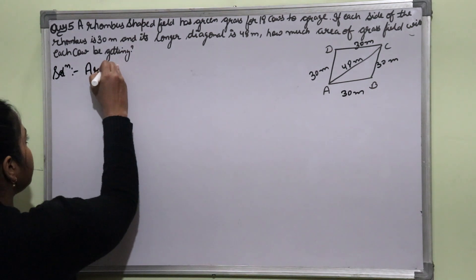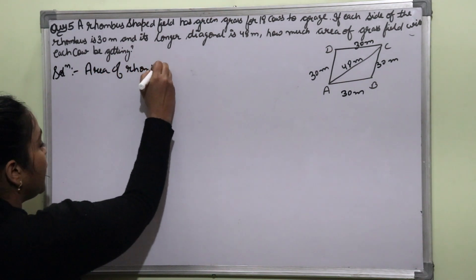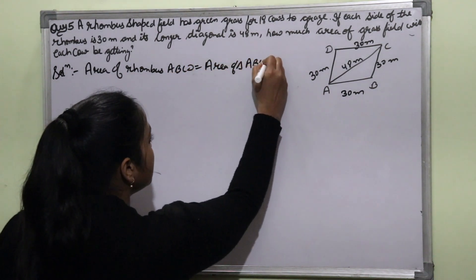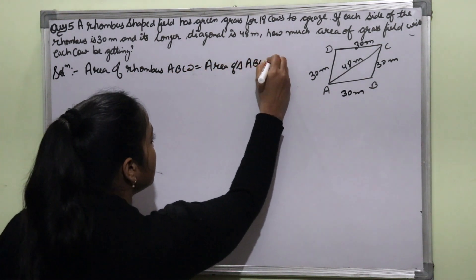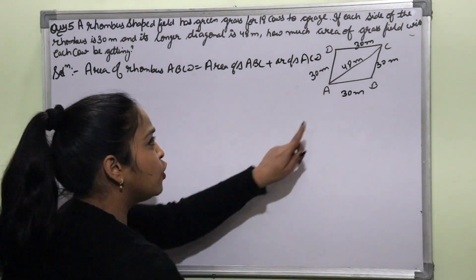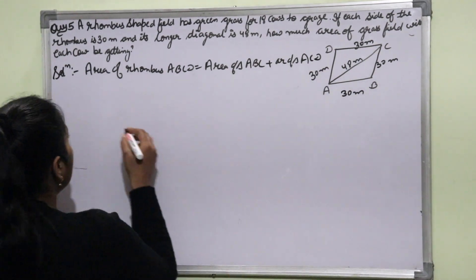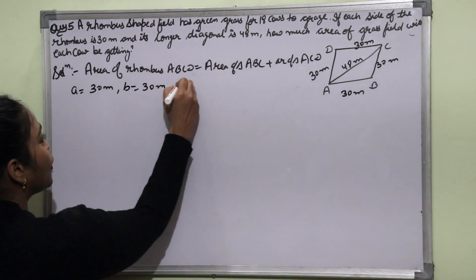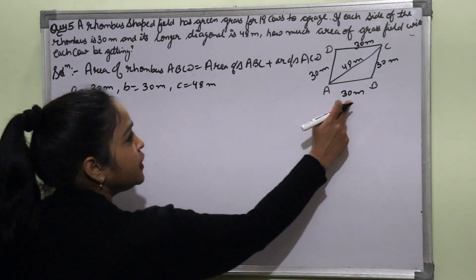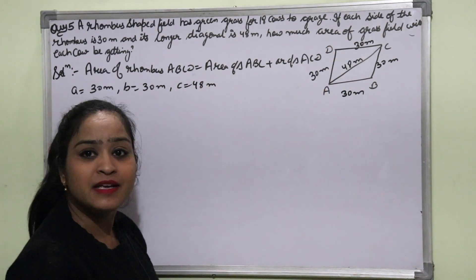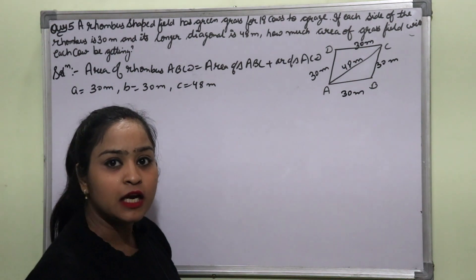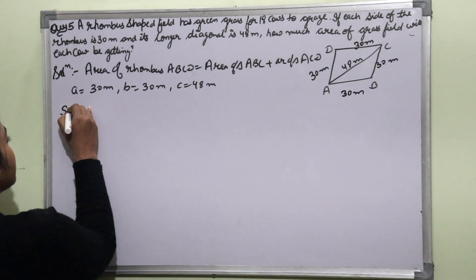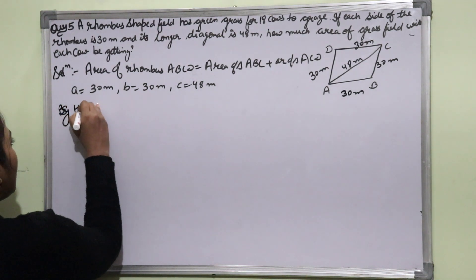Area of rhombus ABCD is equal to area of triangle ABC plus area of triangle ACD. This means we need to find two triangles. The values are: A = 30, B = 30, and C = 48. The other triangle is the same, so we need to find one triangle area and multiply by 2. We will apply Heron's formula.